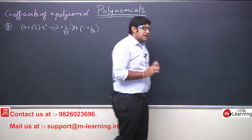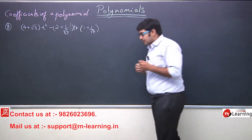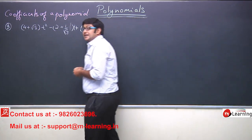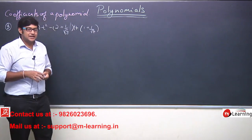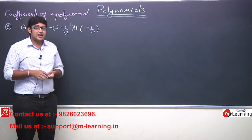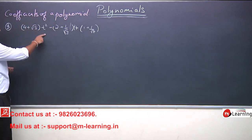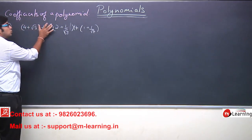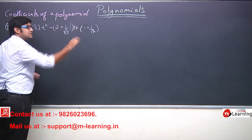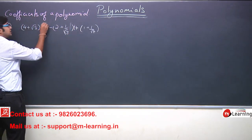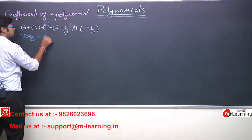हमें यह तो समझ आ गया कि यह expression एक polynomial है. Now, what about its degree? इस expression में degree क्या है? The degree in this expression is 2. इस expression में variable T है और variable T की highest power कौन सी है? 2. So, this 2 is the degree. Degree कितनी हो गई इसकी? 2.